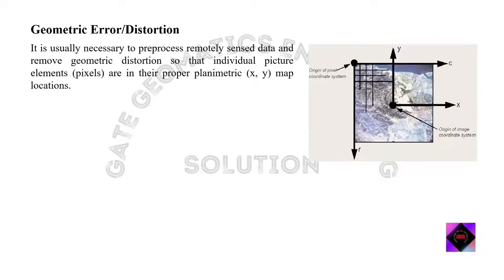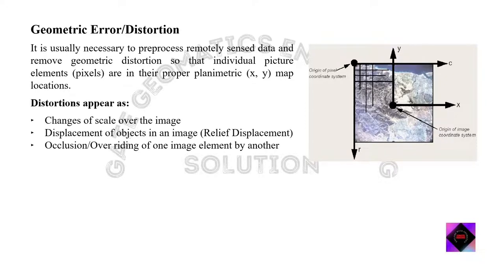How does distortion appear in an image? The first is scale changes over the image — in the center the scale is perfect, but as we go toward the outer edges the scale changes and distorts. The second is displacement of objects in an image, known as relief displacement. Relief displacement is the radial distance between where an object appears in an image and where it actually should be according to planimetric coordinate systems — the object appears at one position in the image but its actual position on the XY coordinate is somewhere else.